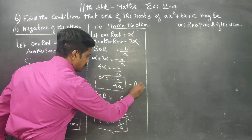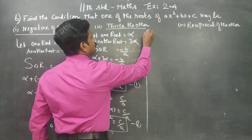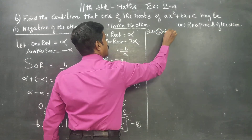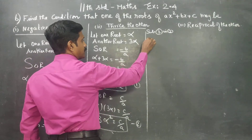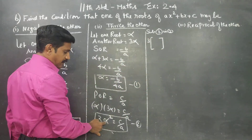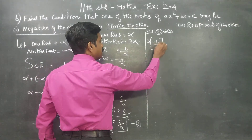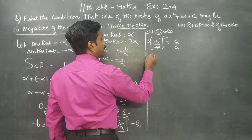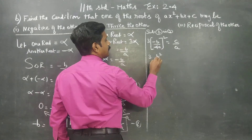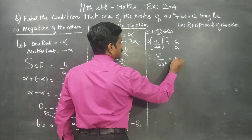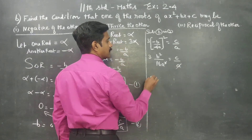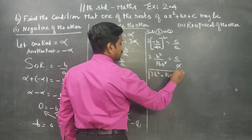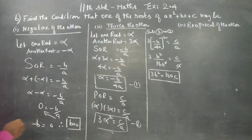I am going to substitute result 1 into result 2. From the sum, 4 alpha equals minus b by a, so alpha equals minus b by 4a. Instead of alpha squared, I put minus b by 4a whole squared equal to c by a. This gives 3 b squared by 16 a squared equals c by a. Cross multiplying, 3b squared equals 16ac. Alpha is eliminated and this is the condition: 3b squared is equal to 16ac.